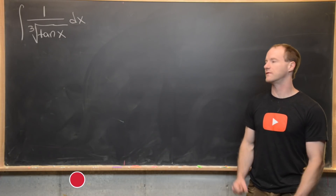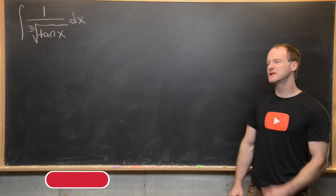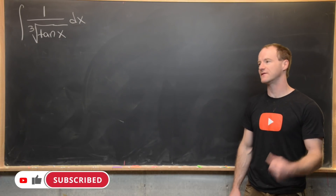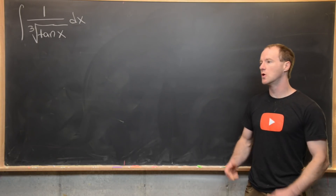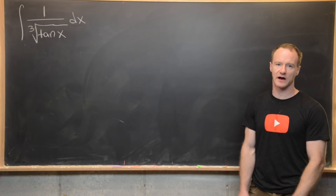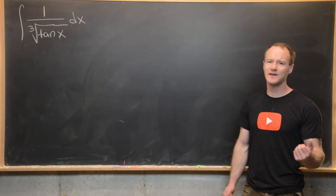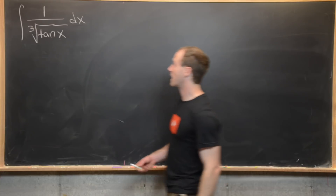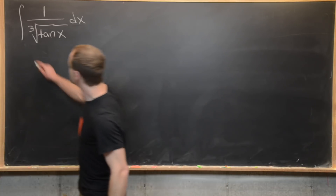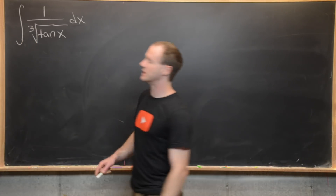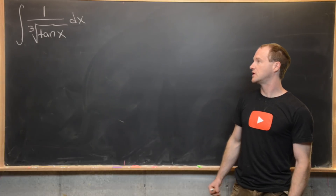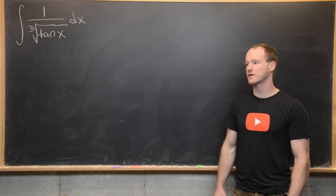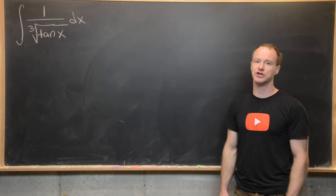Here we're going to do a classic integral video. This one's going to be pretty tricky but only uses elementary results that you might find in a calculus 2 or integral calculus class, which I think makes this problem a great review for a course like that. So what we want to do is find the antiderivative of 1 over the cube root of tangent x dx, and we're going to start with a standard u-substitution.